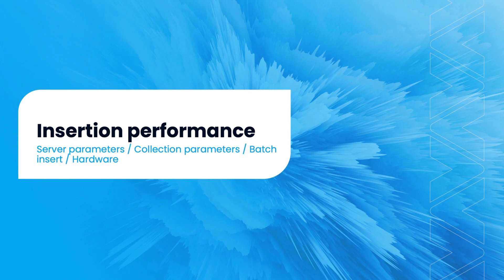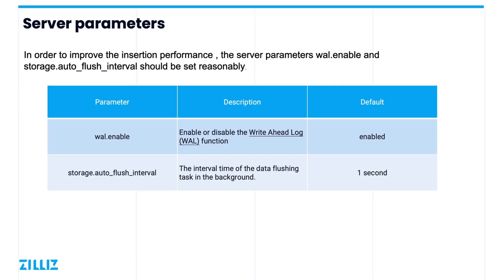Let's begin by seeing what factors affect insertion performance and what we can do to improve it. The key things we need to know before tuning insertion are the amount of data to insert and the current hardware being used for the Milvus node. As mentioned in the second lesson, the Milvus server parameters can be modified in the configuration file called server-config.yaml. There are two parameters in this file that affect performance of data insertion: wal.enable and auto-flush interval.